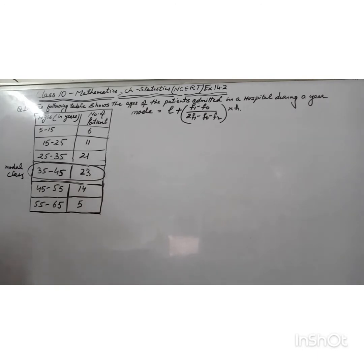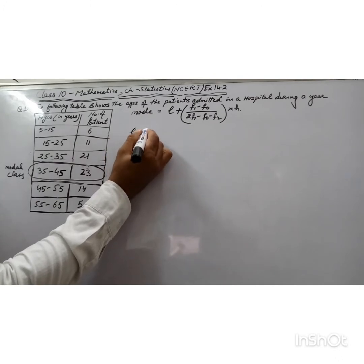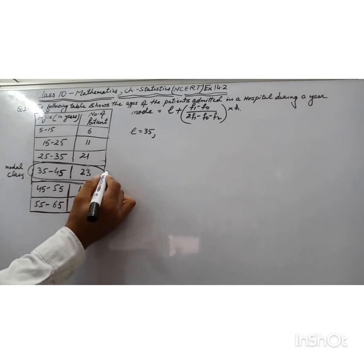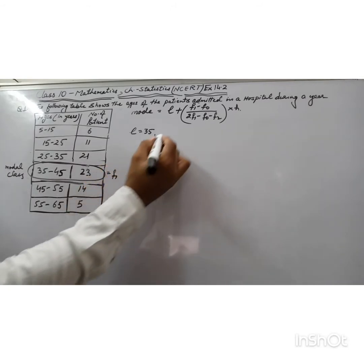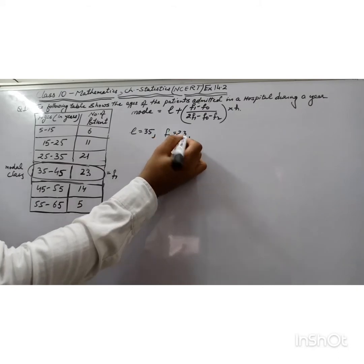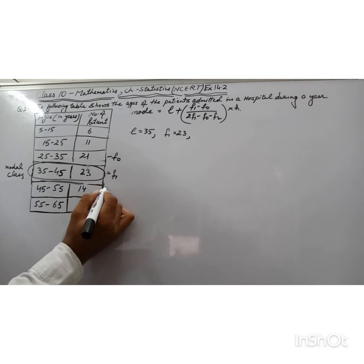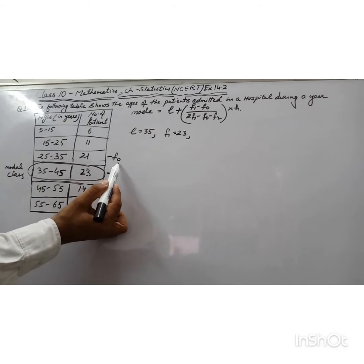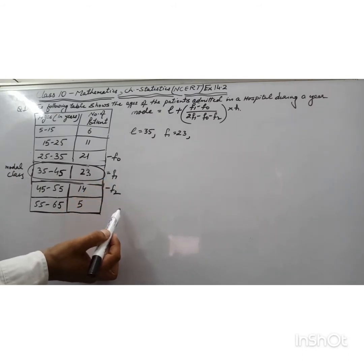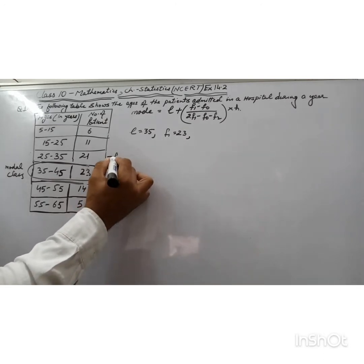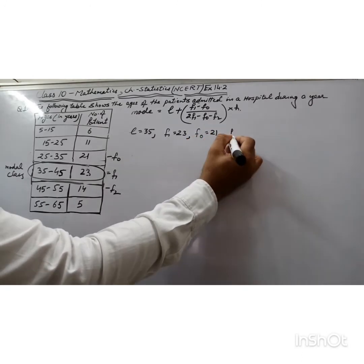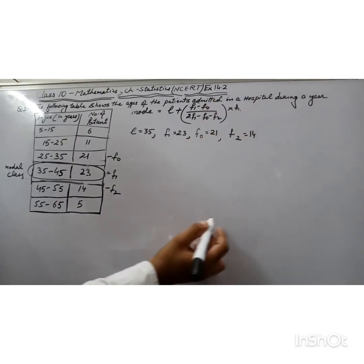The lower limit of modal class is 35, so L = 35. f1 is the frequency of the modal class, so f1 = 23. f0 is the frequency of the preceding class, so f0 = 21. f2 is the frequency of the class succeeding the modal class, so f2 = 14.